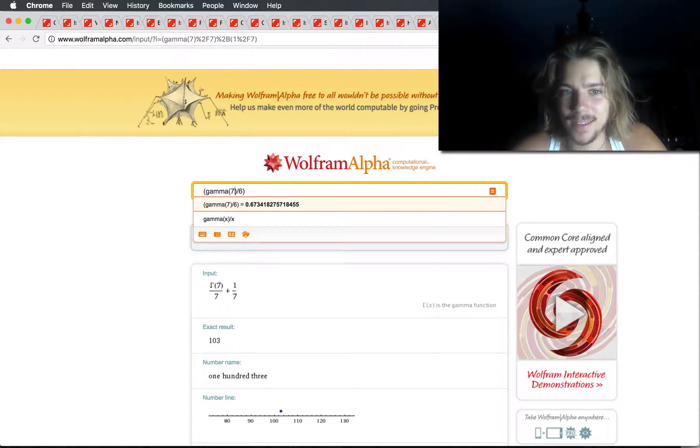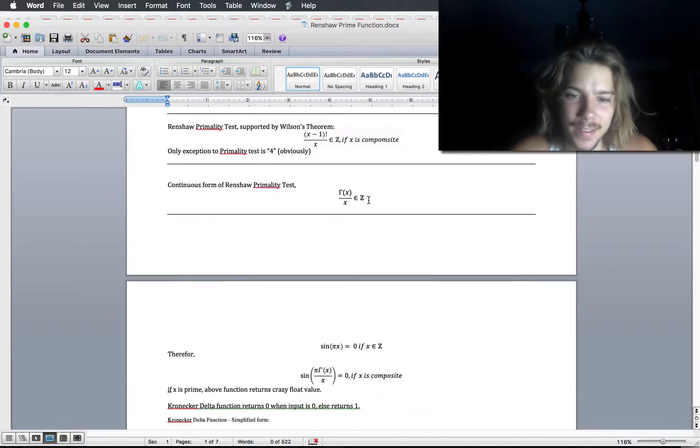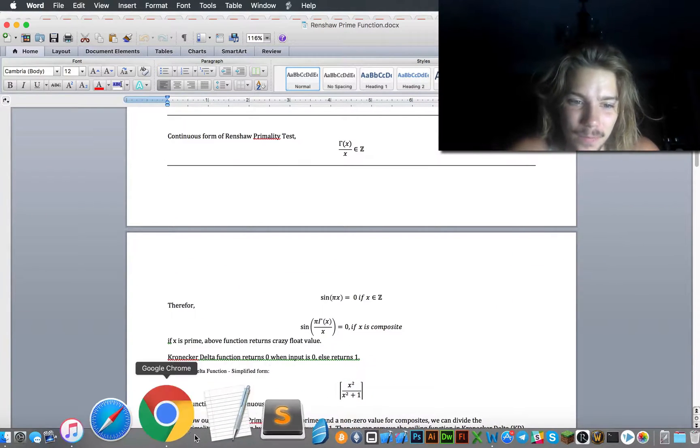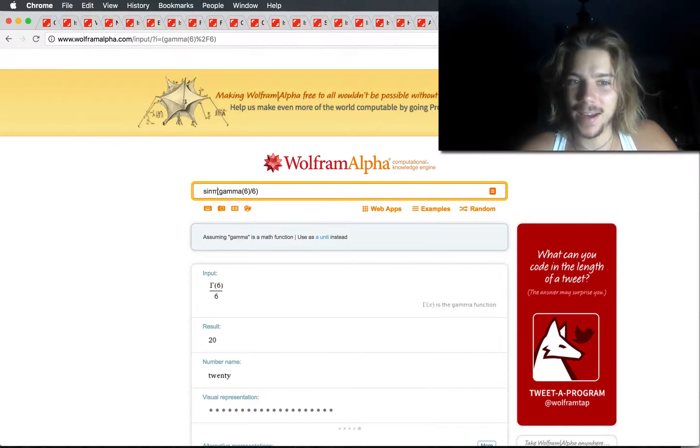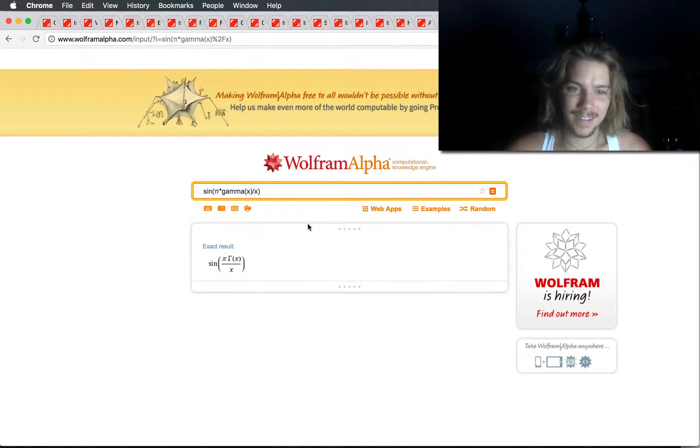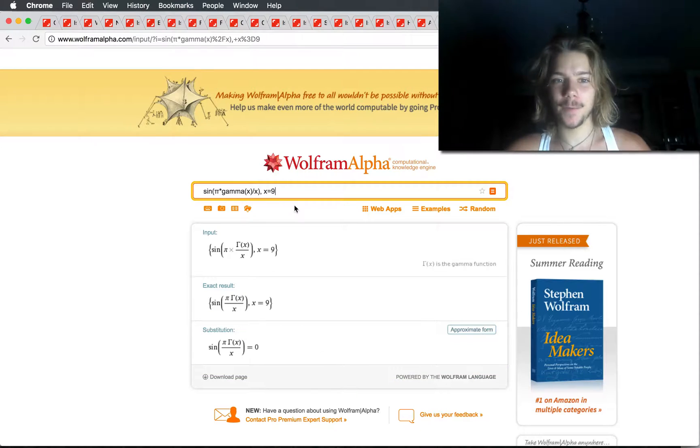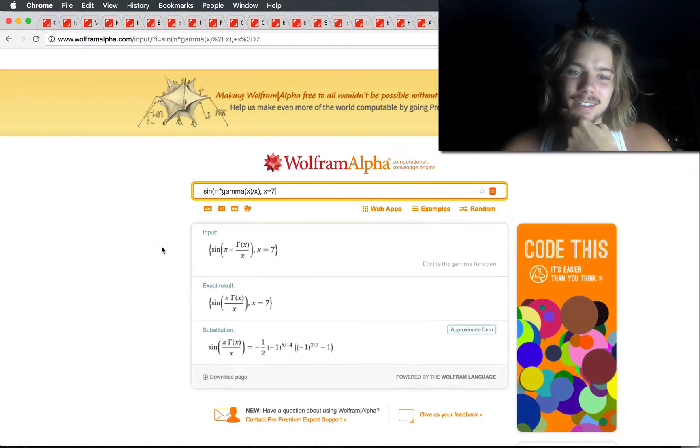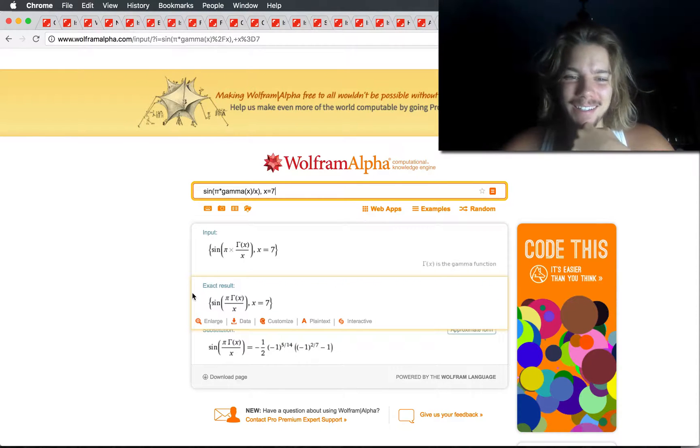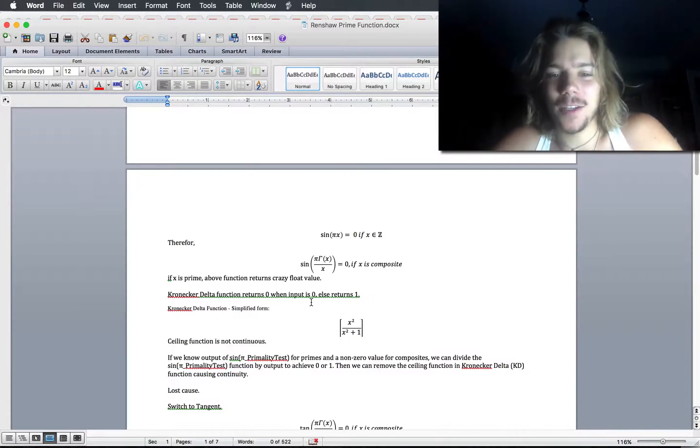So what I found was when you did gamma x over x with a prime number, the result would always be an integer minus 1 over x, or plus x minus 1 over x. So what I mean is, if we were to use a prime like 7, and then we also added back 1 over 7, we would get an integer answer. Whereas if we did a non-prime number like 6, it would already be an integer answer without the need to add.